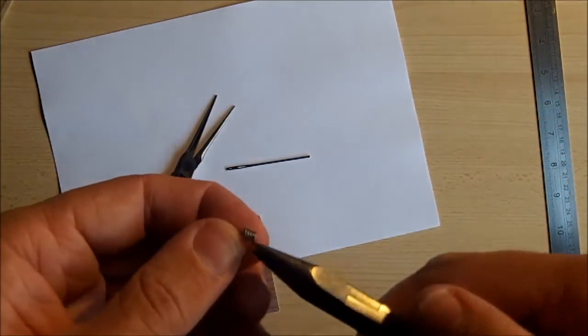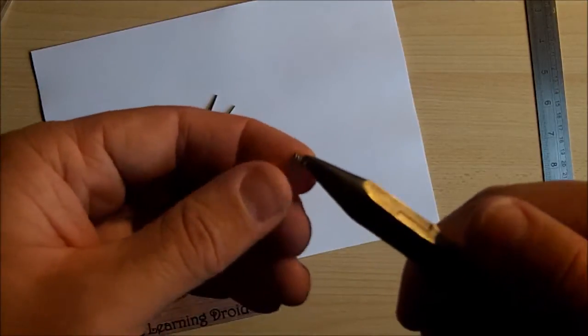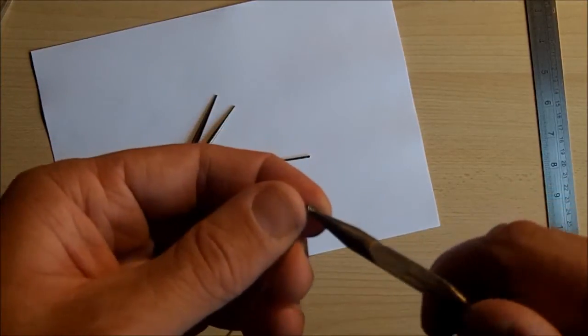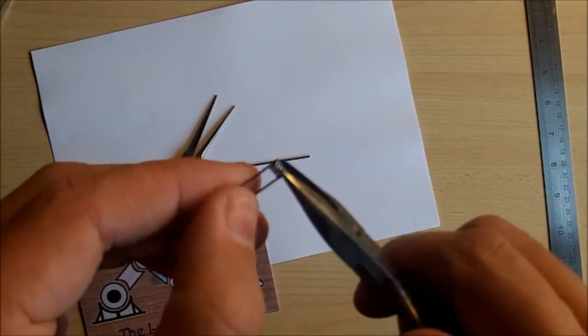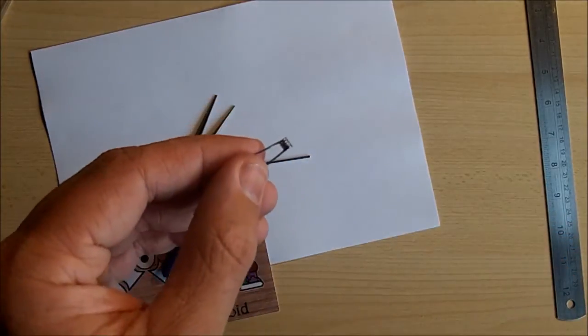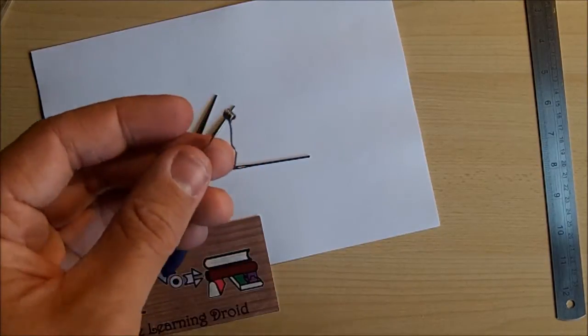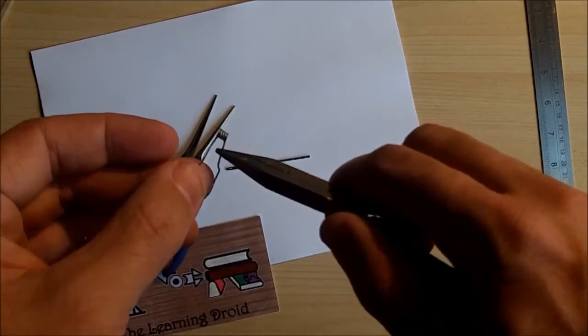I just need to tweak this outer one on this side. So I'm going to put the pliers in and just give it a little bit of a tweak because it's still a bit far out. There we go. All done. So that's our coil point. And the last bit we have to do is shape the tines.